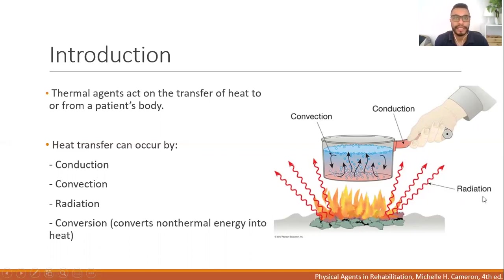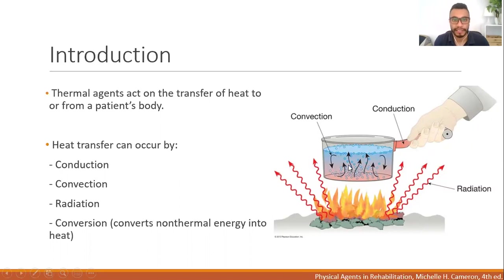Inside the pan, the boiling water transfers heat by convection. This mechanism of convection requires the presence of fluid — with the movement of fluids, heat is transferred by convection. An example of convection in physical therapy is hydrotherapy, specifically the whirlpool: a tank with warm water that is agitated.